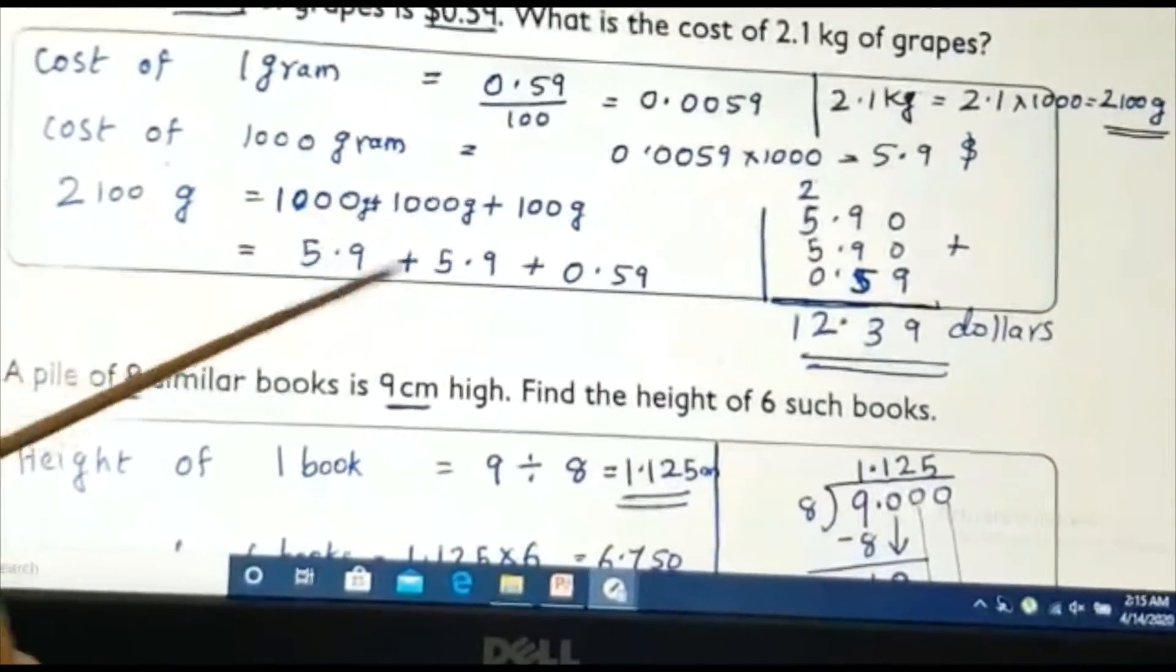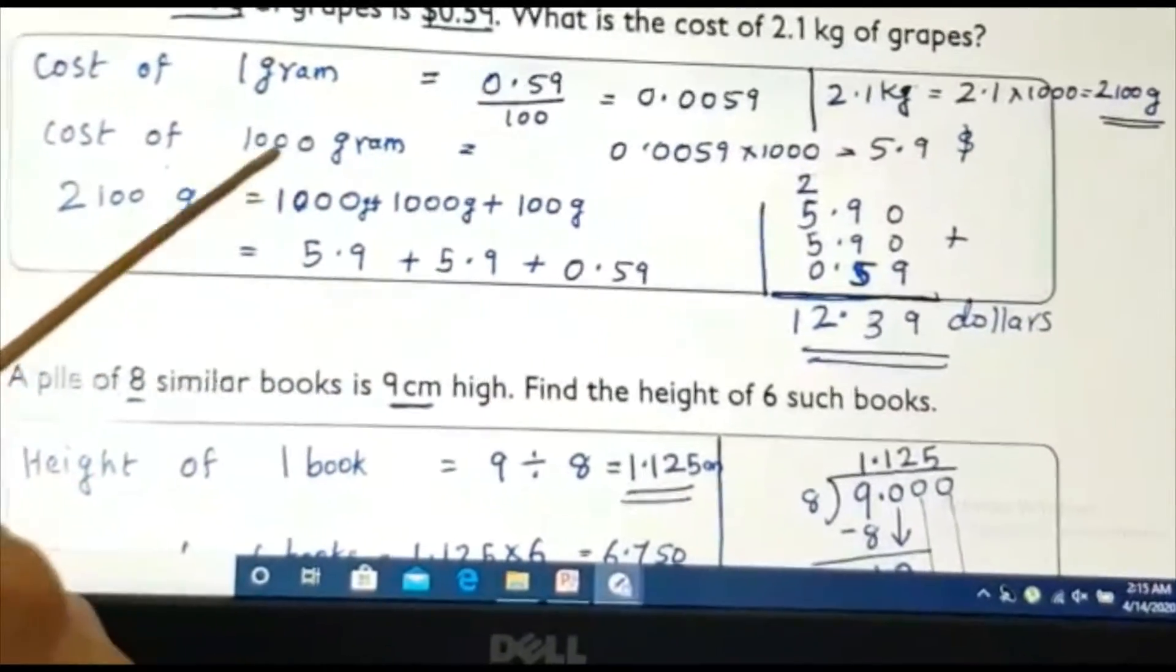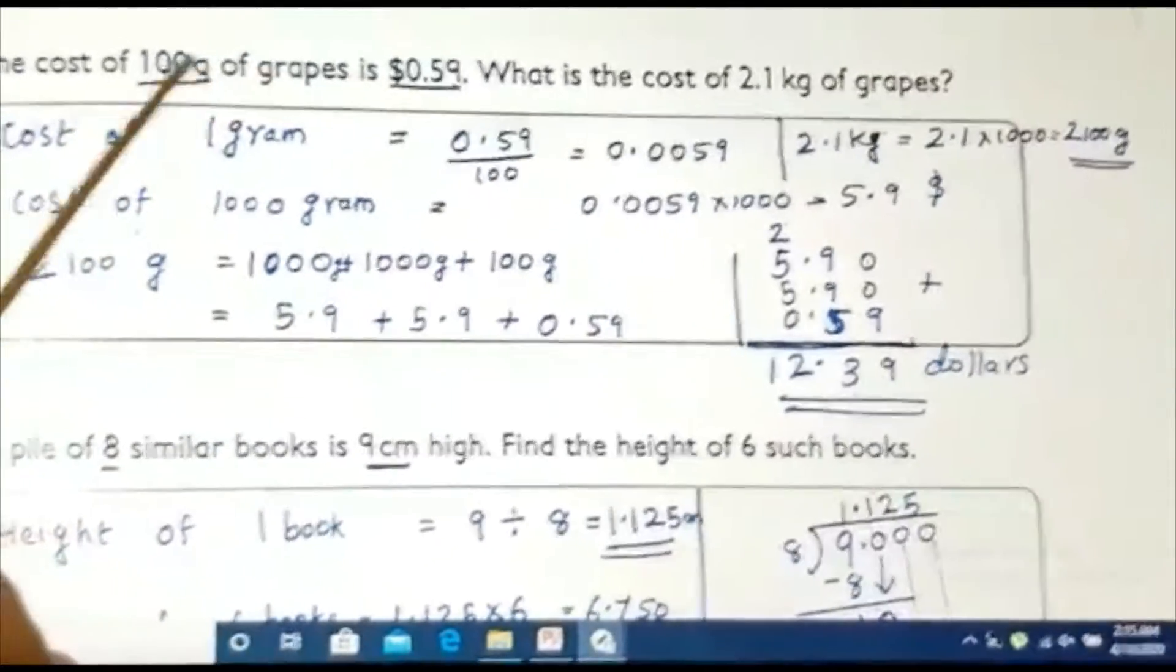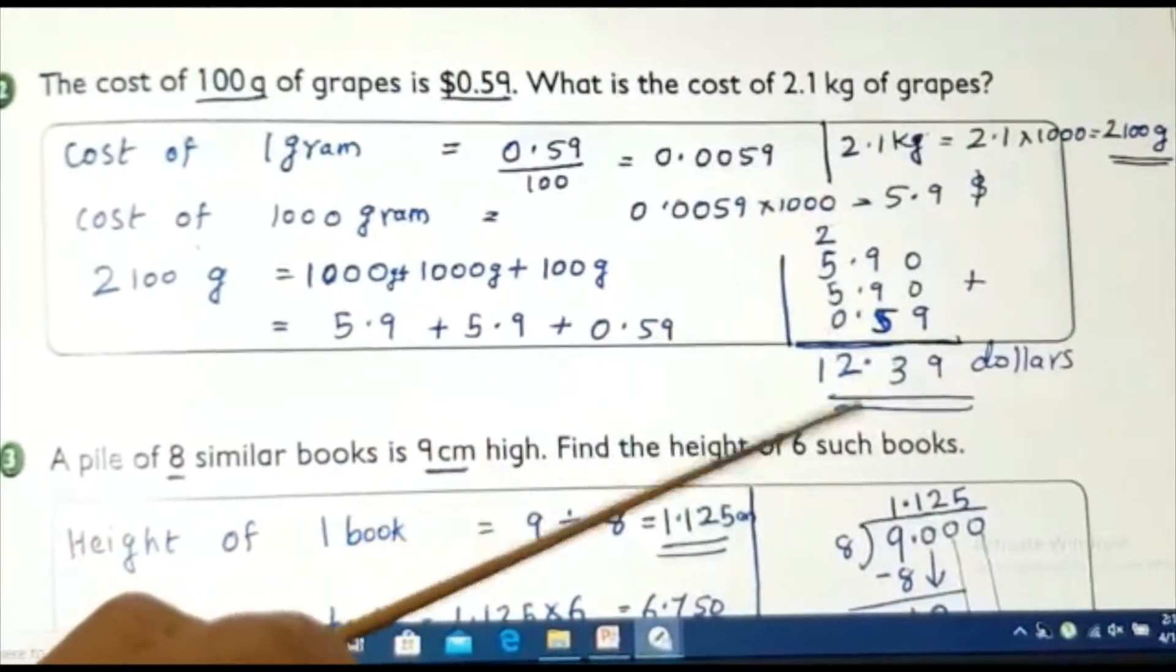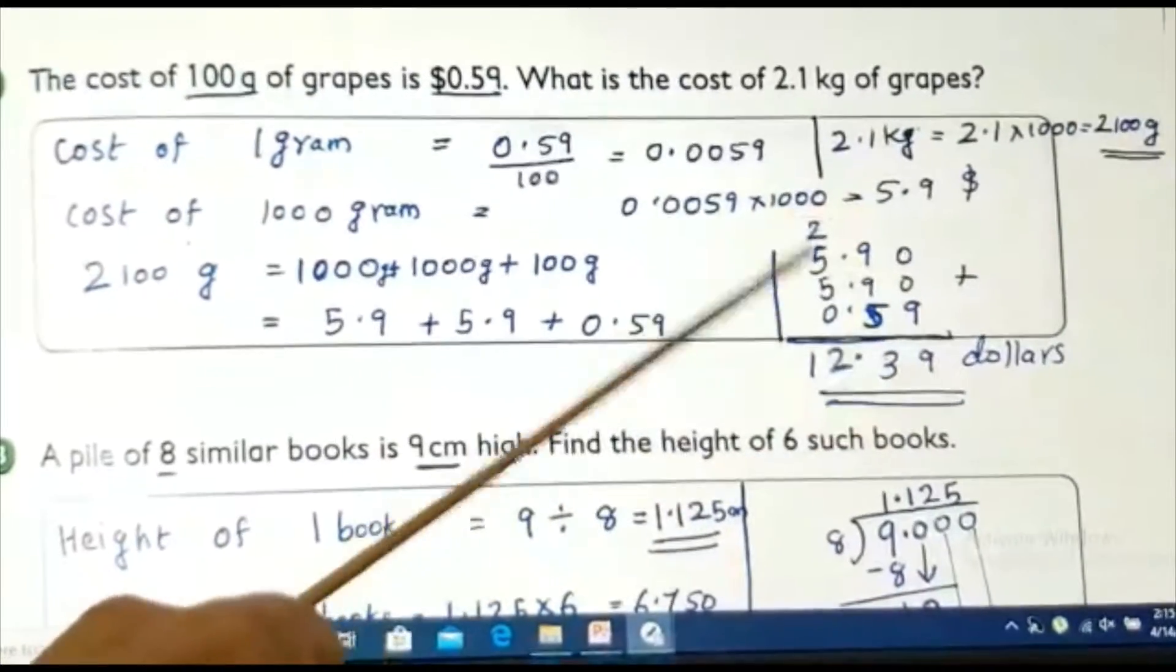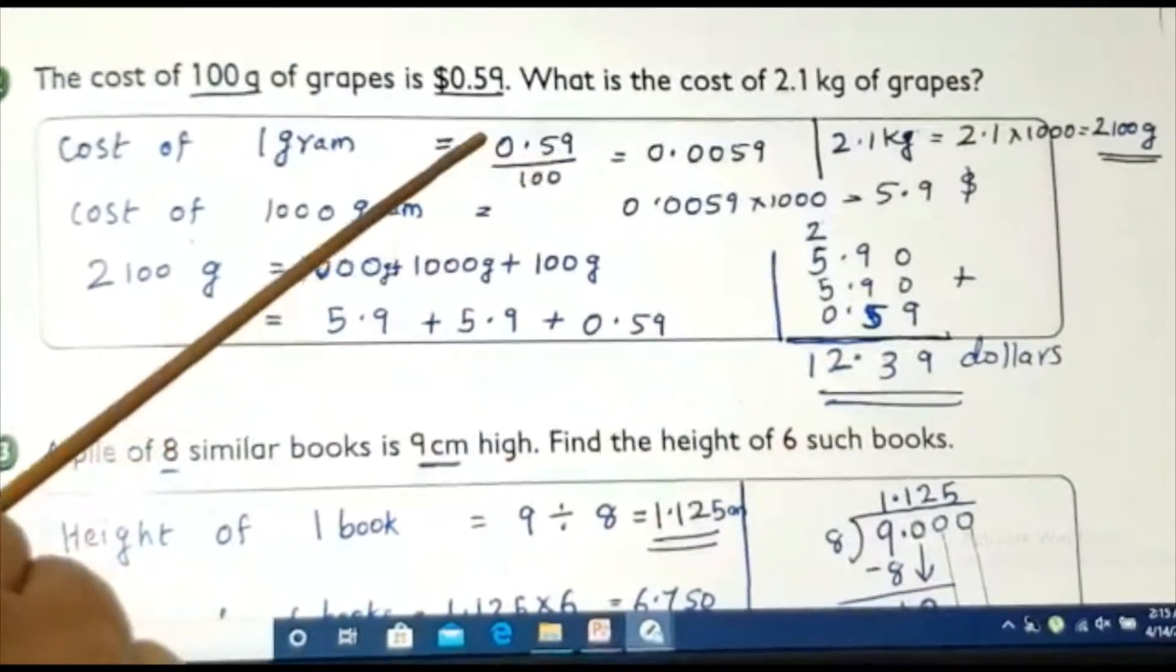We know for 1,000 grams it is 5.9. Again, 1,000 gram is 5.9. 100 gram, we already got how much 100 gram. It is in the question, 0.59. Then, I will add all these things by aligning properly. How much you will get? It is 12.39 dollars. Is it clear?